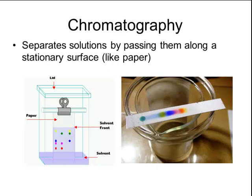Another way to separate solutions is called chromatography. This method separates solutions by passing them along a stationary surface, usually chromatography paper or filter paper. You place a liquid solution on that filter paper, then stick the end of the filter paper down into a solvent, usually alcohol or acetone. That liquid is carried up the paper by capillary action, and in the process causes all the different pigments in the liquid to separate from each other.